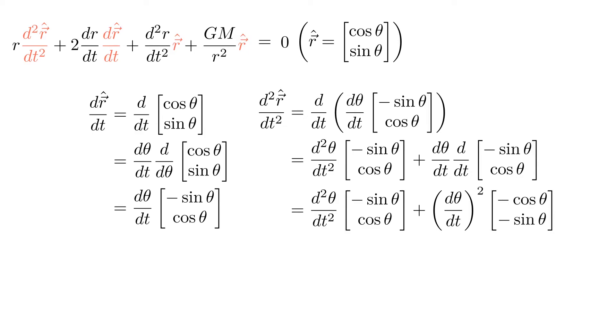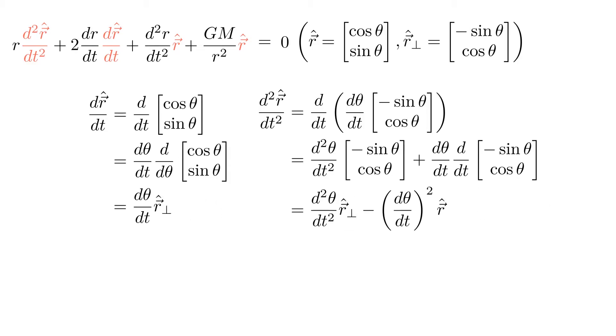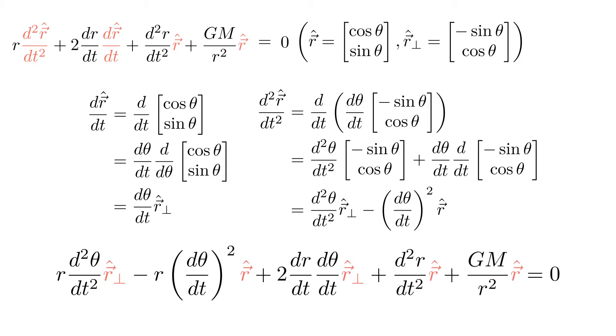We see two different vectors here: cos theta sin theta and minus sin theta cos theta. The first one we have already called r hat. Let's call the other one r perp hat, which is perpendicular to r hat. Now we can rewrite the original equation in terms of r hat and r perp hat.